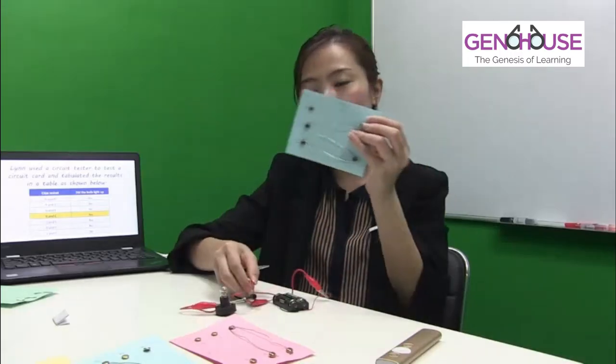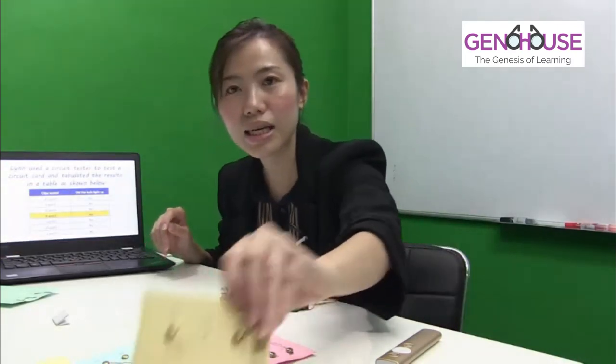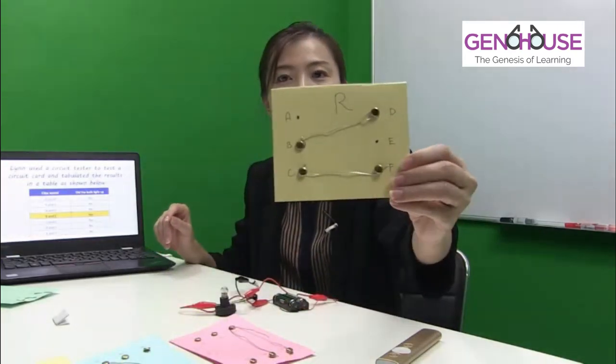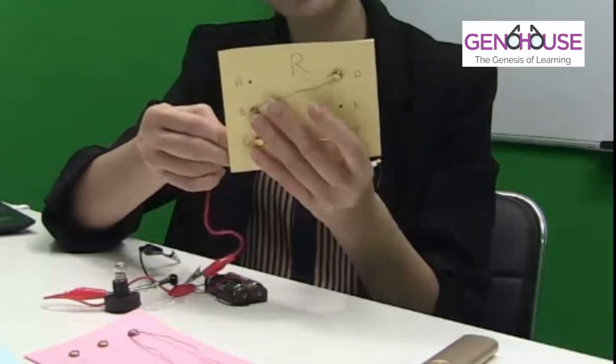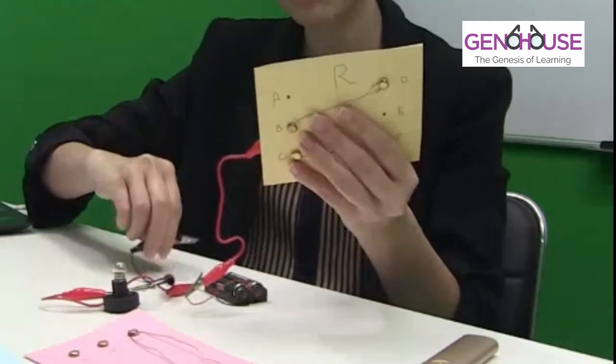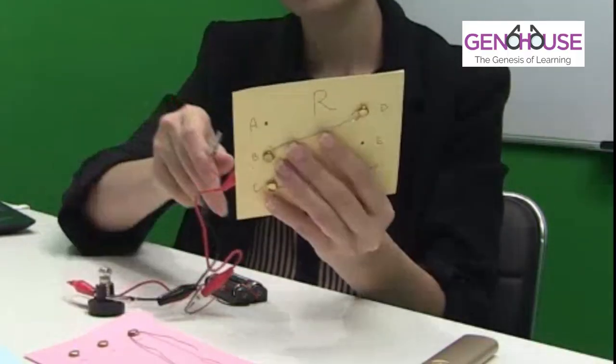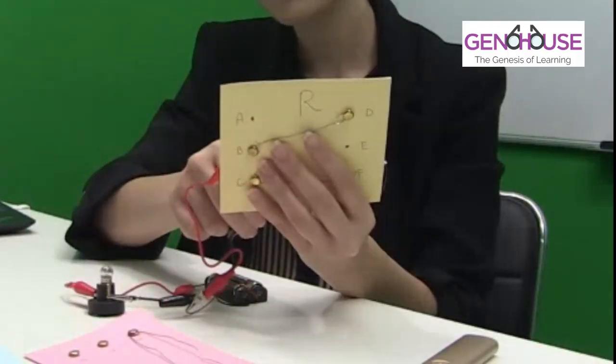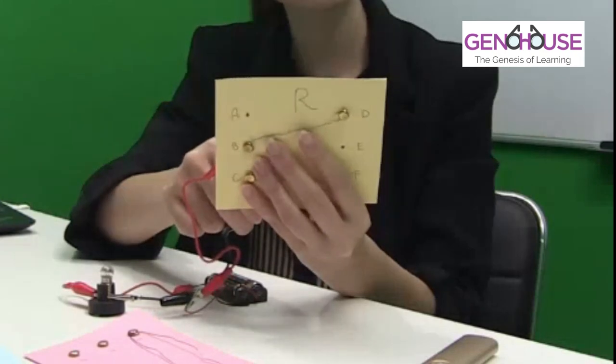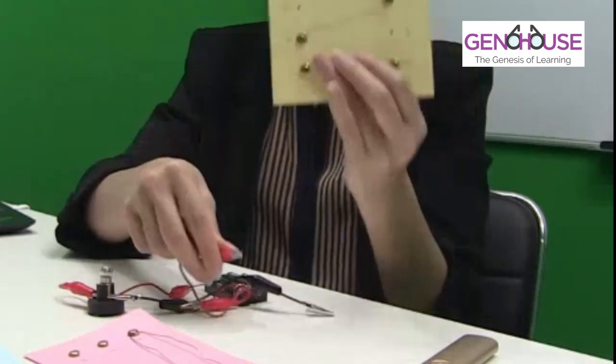Now we test card R. I test B and C first, but the light bulb does not light up at all. So I can immediately eliminate this card.